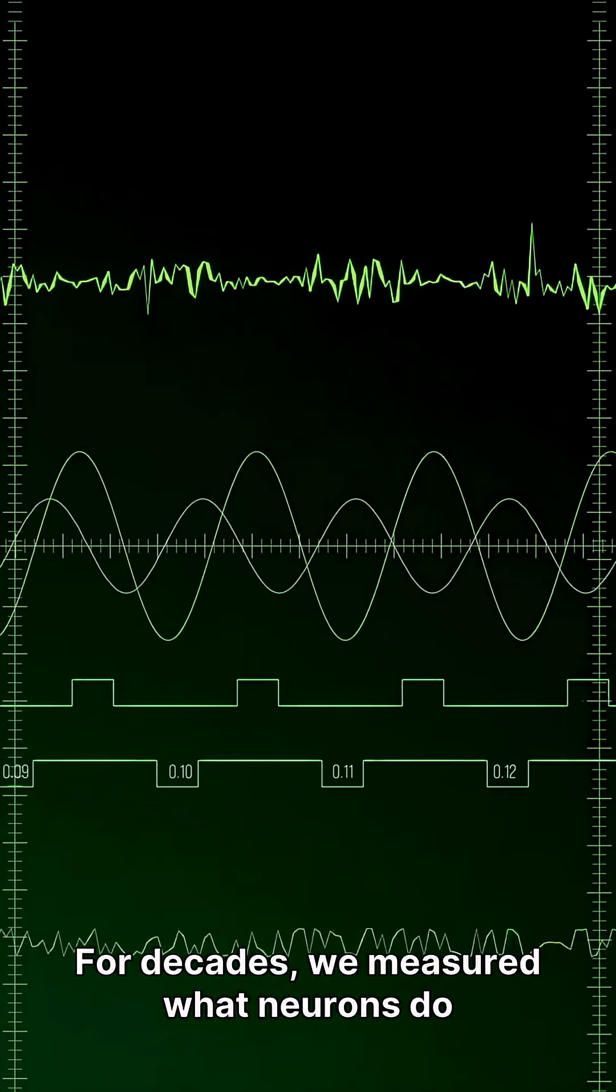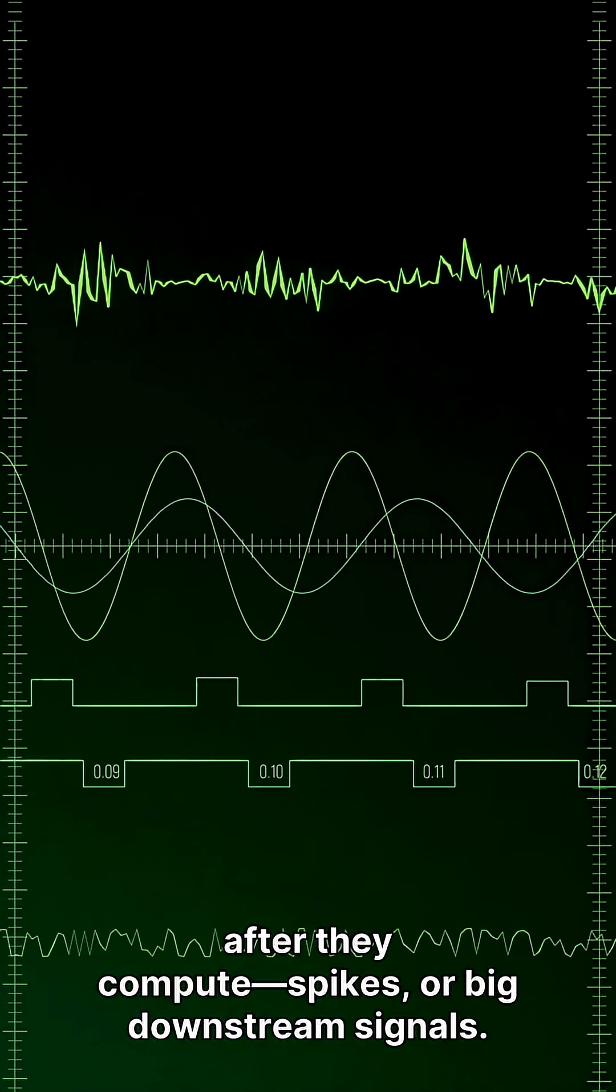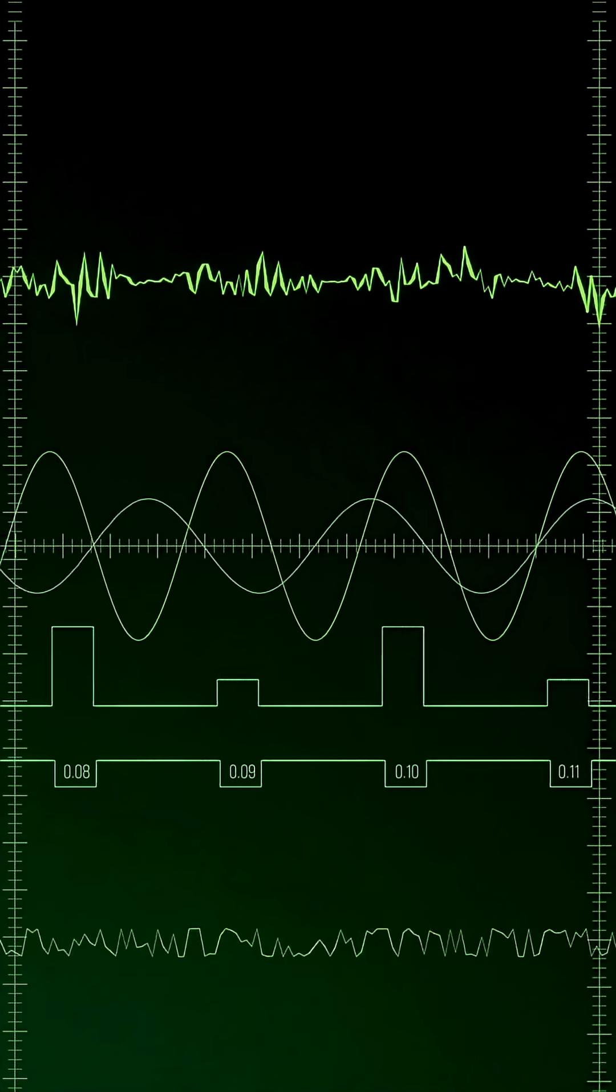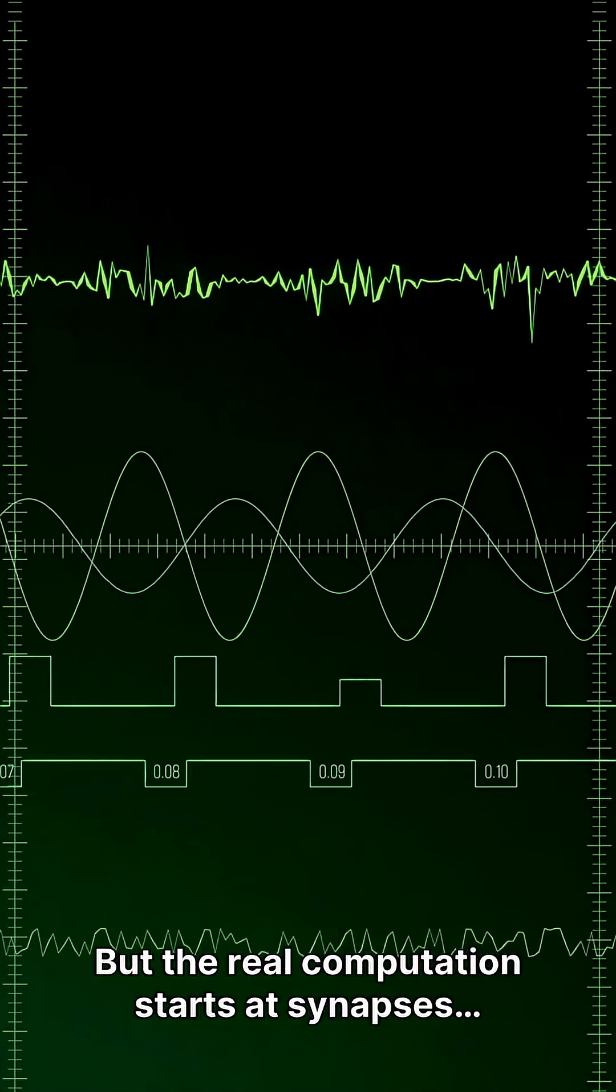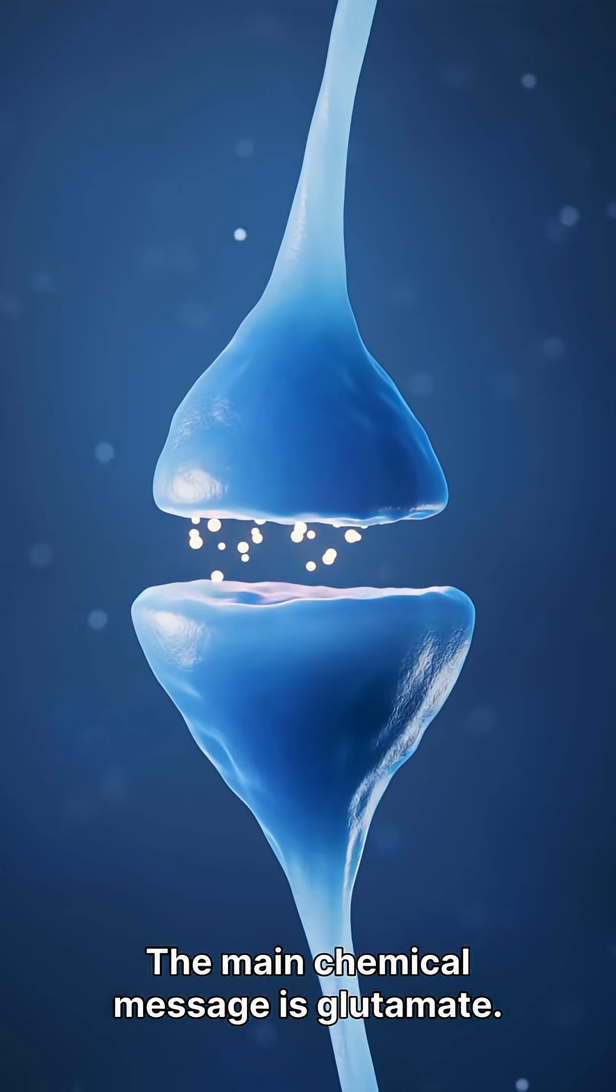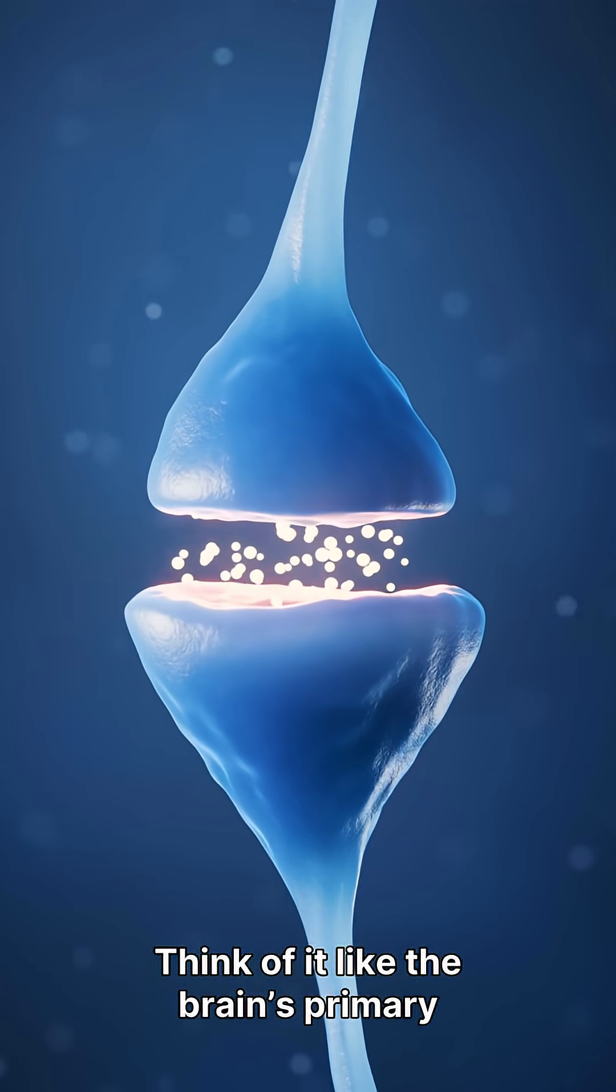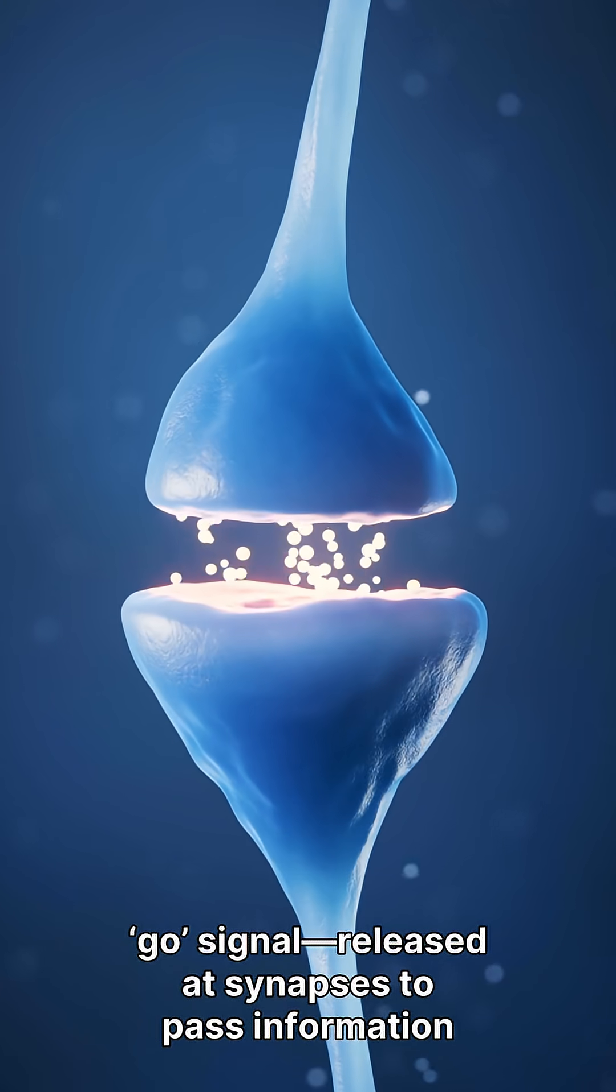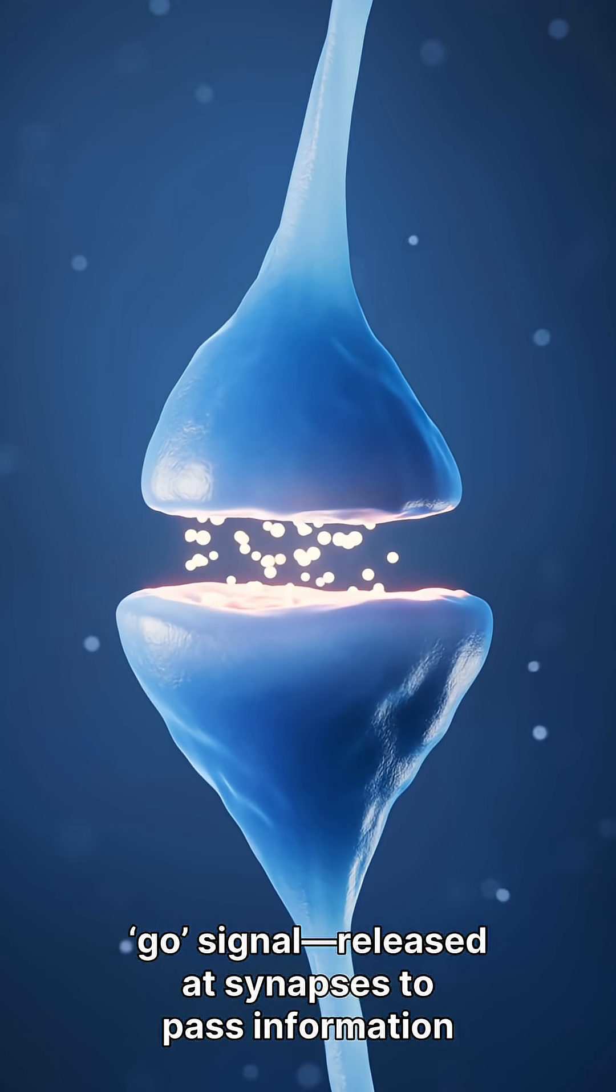For decades, we measured what neurons do after they compute—spikes or big downstream signals. But the real computation starts at synapses, where chemicals carry the message. The main chemical message is glutamate. Think of it like the brain's primary go signal, released at synapses to pass information forward.